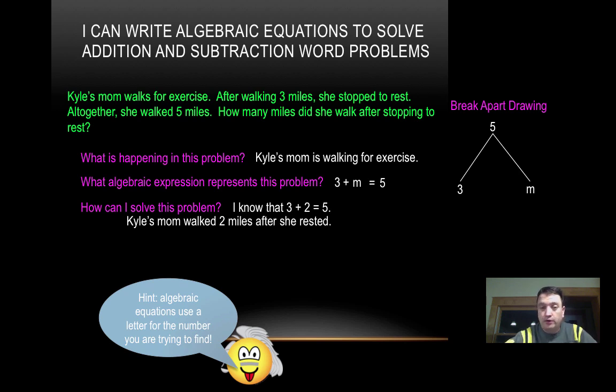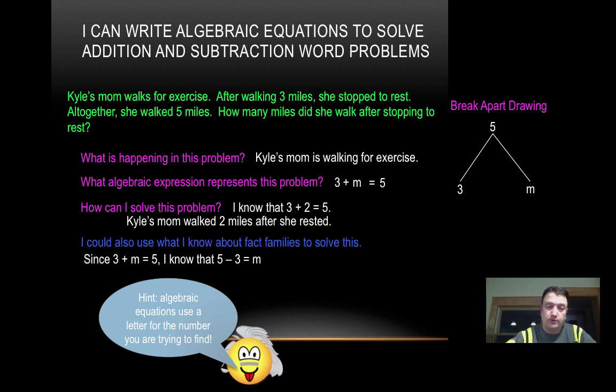But if I didn't know that, or if the numbers were more difficult than ones that I could just figure out in my head, I can always use what I know about fact families to help me solve this. Since I know three plus M equals five, I also know as a fact family that I can move those numbers around, and I know that five minus three will give me M. When I solve that, I get two.